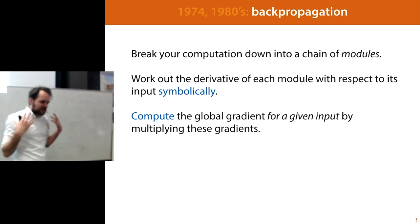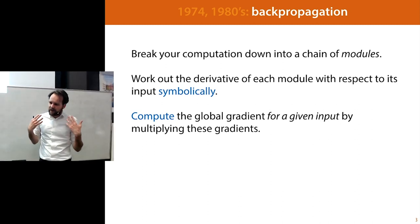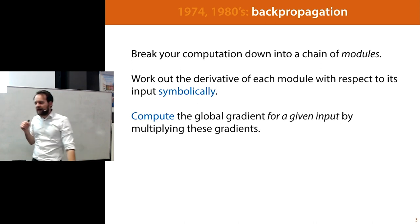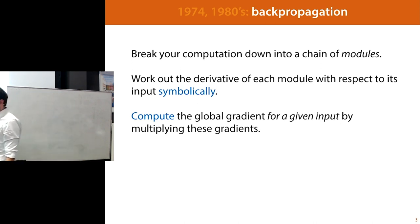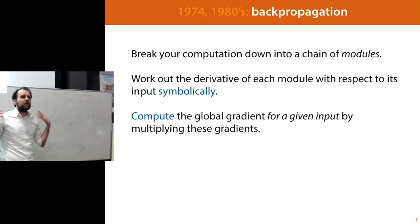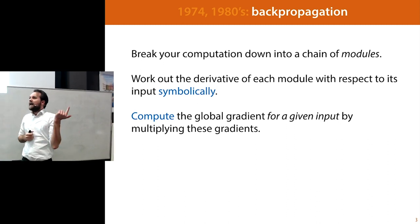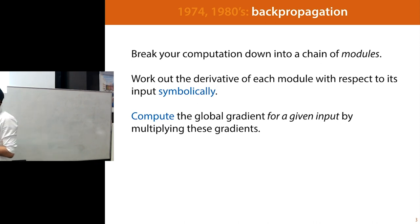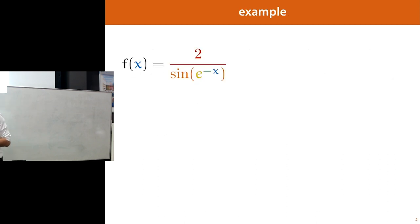Basically, the idea of backpropagation is that if we have a very complex function, we cannot easily or cheaply work out the derivative by hand. We need the computer to do it for us. And we cannot do it purely symbolically — we need a mixture of symbolic and numeric operations. That mixture is called backpropagation.